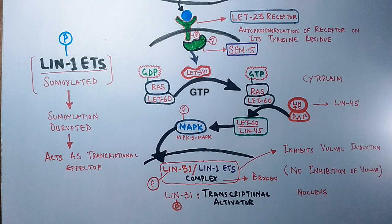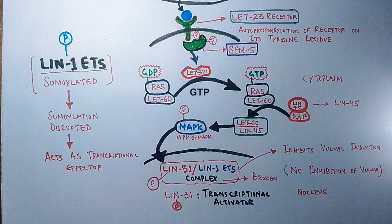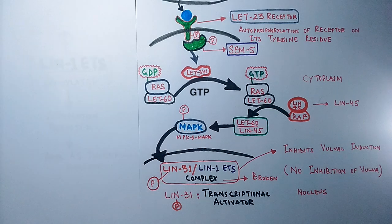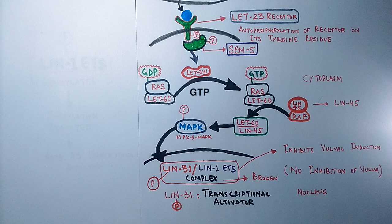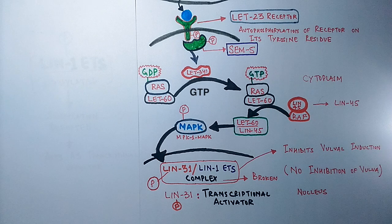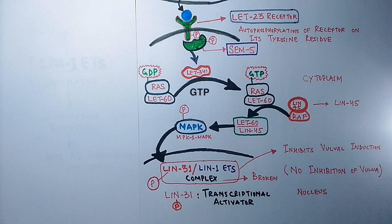But this leads to creation of 1 degree vulval cell. There exists another signal called the lateral signal which determines the fate of adjacent vulval precursor cells to lead them into 2 degree vulval precursor cells. Let's see how this lateral signal is generated by 1 degree vulval cell and transduces into adjacent VPCs.